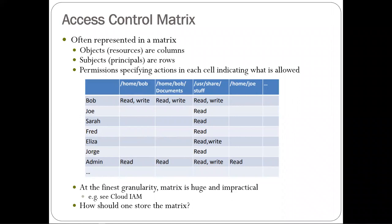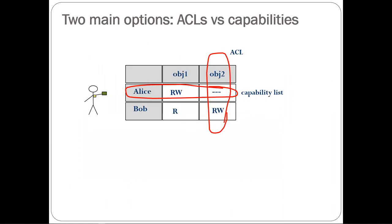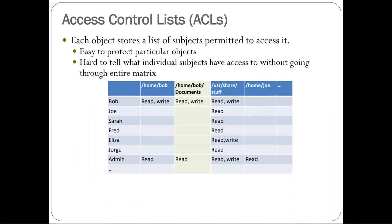If we have to have this matrix, how do you store it? There are two different options you typically come across. You can store it as an access control list (ACL) or as capabilities. This is basically the difference between storing columns or storing rows in a system. An access control list stores the permission policies next to the object — if it's a file, the file metadata has the permission policy on it.